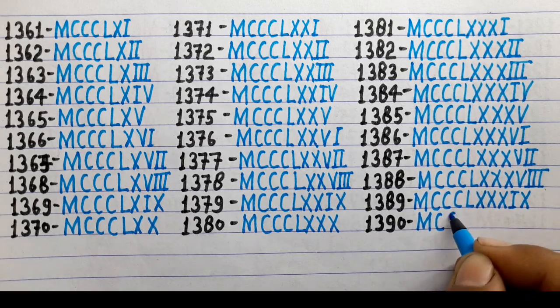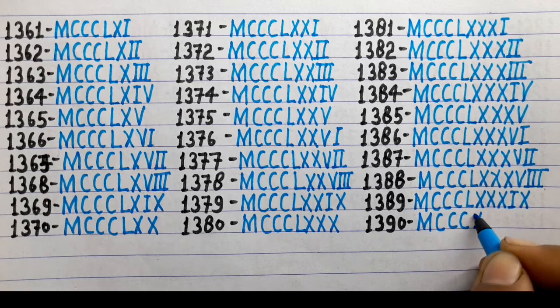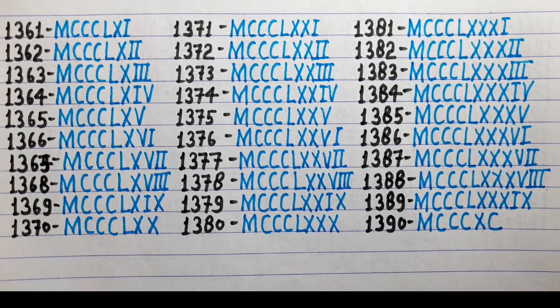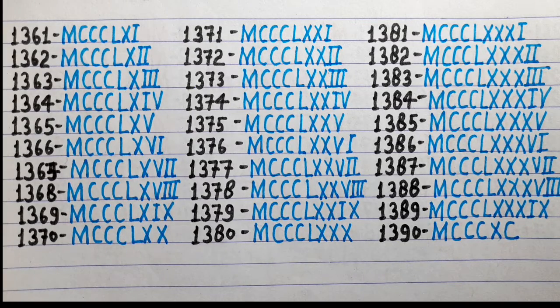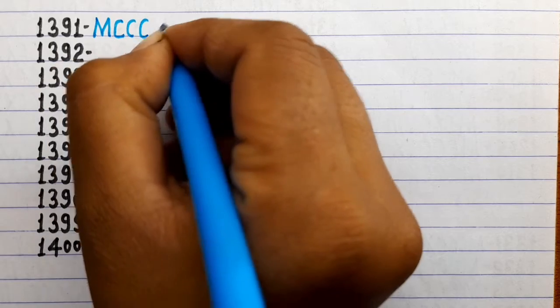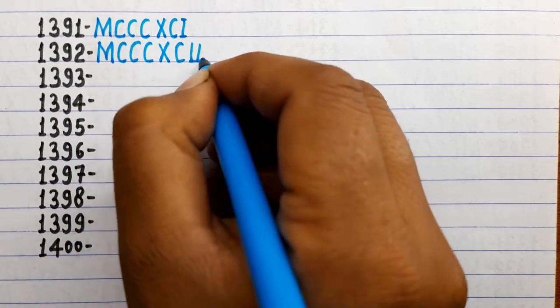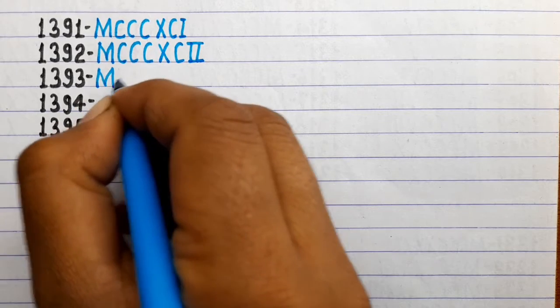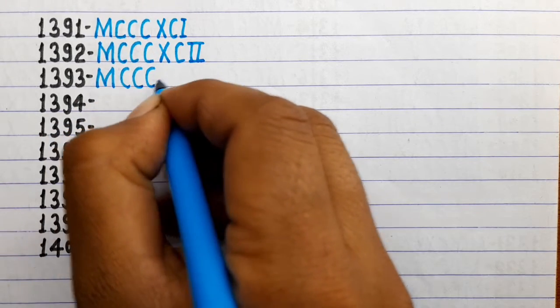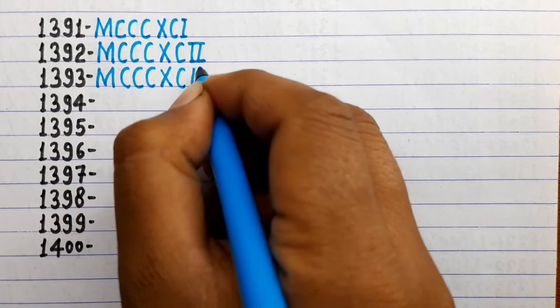1390 is MCCCXC. 1391 is MCCCXCI. 1392 is MCCCXCII. 1393 is MCCCXCIII.